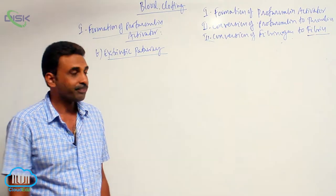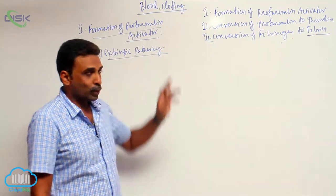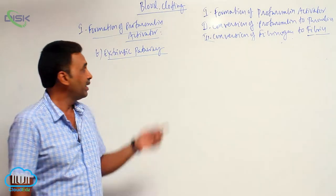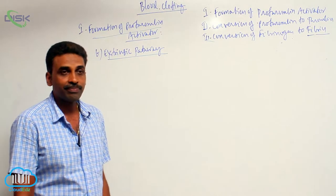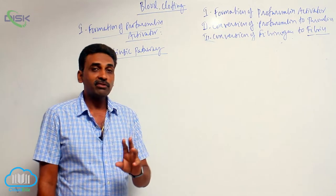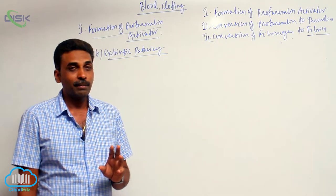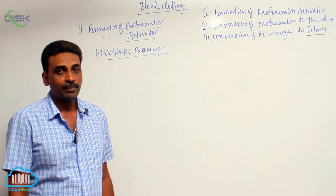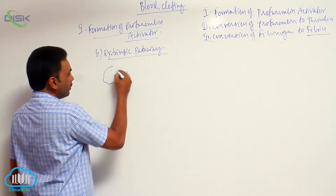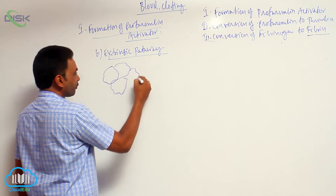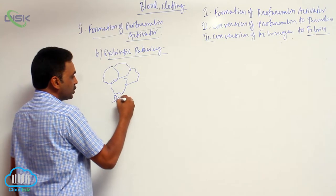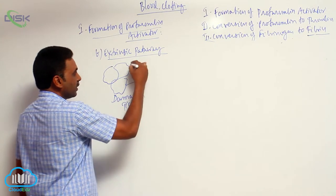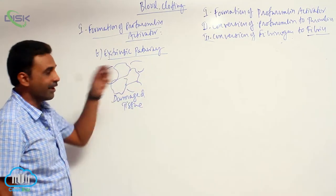Now, prothrombin activator formation is also seen in the extrinsic pathway. In the extrinsic pathway, prothrombin activator formation occurs by substances present outside the blood. When tissues are damaged, a tissue is damaged...